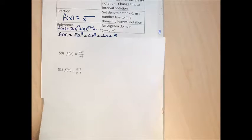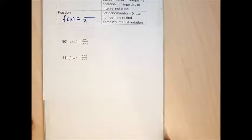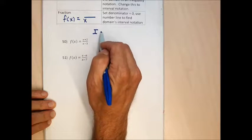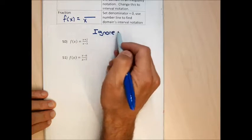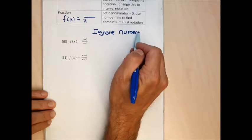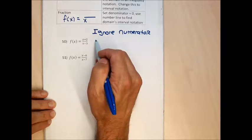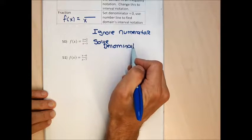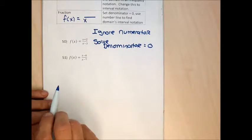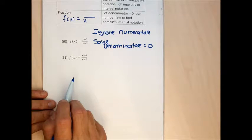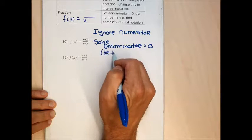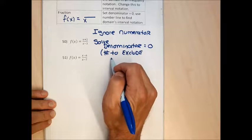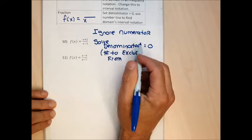The next type of problem is fractions. To find the domain of a fraction, you ignore the numerator. The algebra required is to solve the denominator equal to zero. This gives the number to exclude from the domain — the value of x that makes the denominator zero is the value that makes the function undefined.